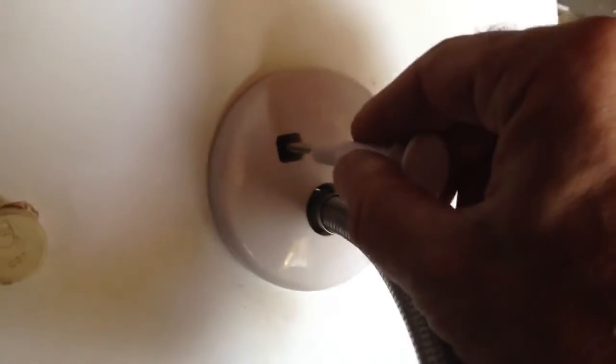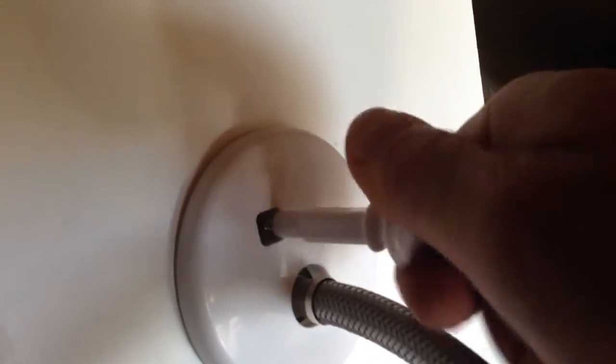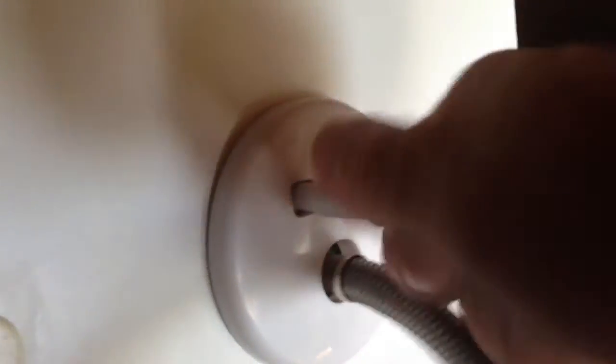Take your handle, and there's a self-tapping screw. You just give at least four turns on your handle to ensure it's on there. The more you crank your handle down, the closer the knob will be to the face of the escutcheon.